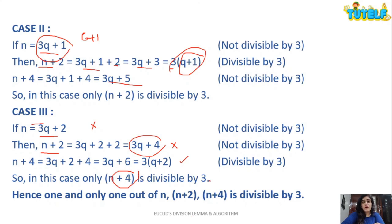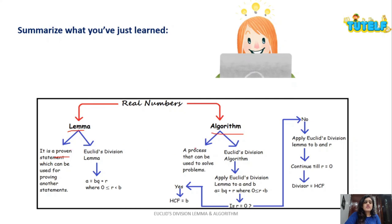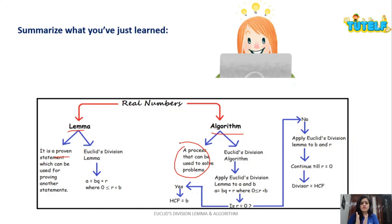You can check many types of similar questions on our website — like showing whether the cube or square of any positive integer can be expressed in a given form. Let's quickly summarize what you've learned. In real numbers, we have two terms: lemma and algorithm. A lemma is a proven statement used to prove another statement — it does not give you steps. An algorithm is a process used to solve a problem — it gives you the steps.